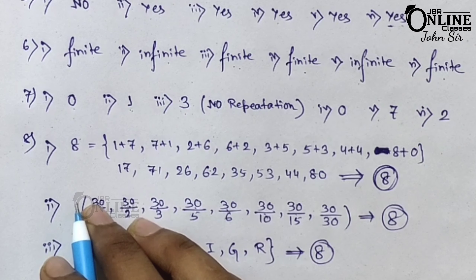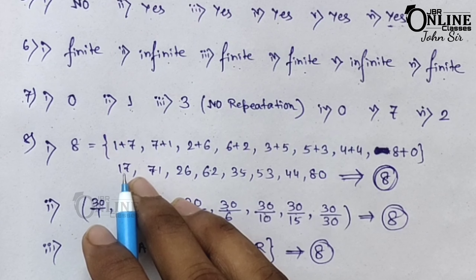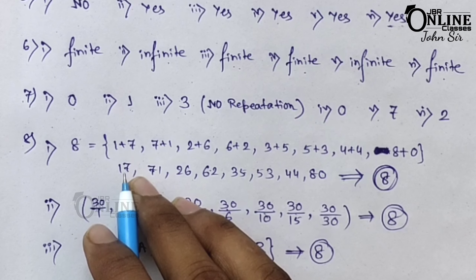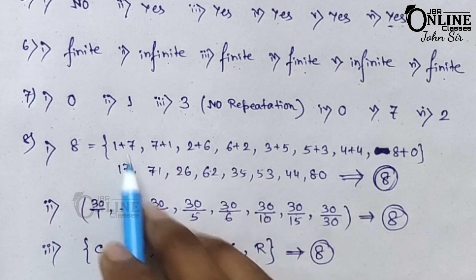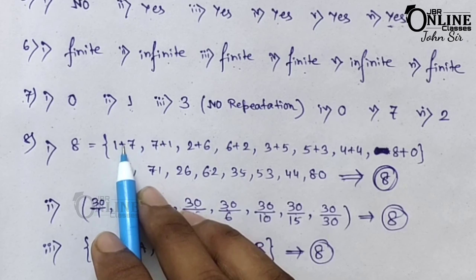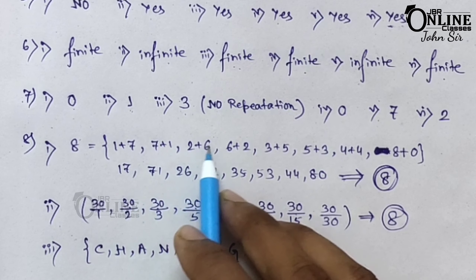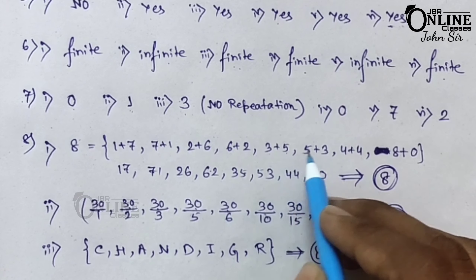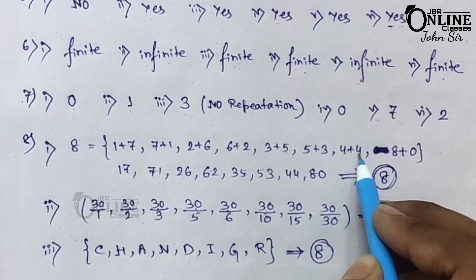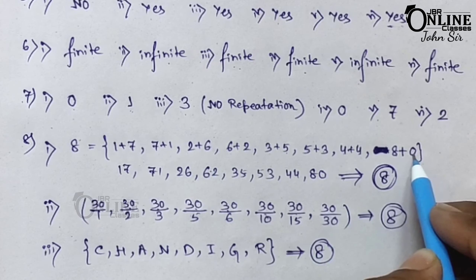Sum number 8, number 1: write the cardinal number of the set where A = {x | x is a two-digit number whose digits sum to 8}. The two-digit combinations: 1+7=8, 7+1=8, 2+6=8, 6+2=8, 3+5=8, 5+3=8, 4+4=8, 8+0=8. So the numbers are 17, 71, 26, 62, 35, 53, 44, 80.